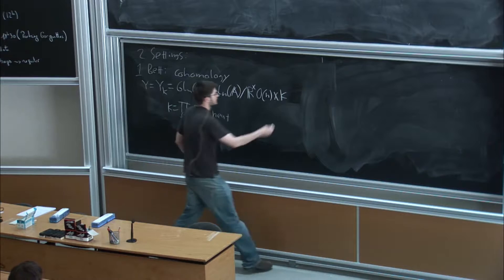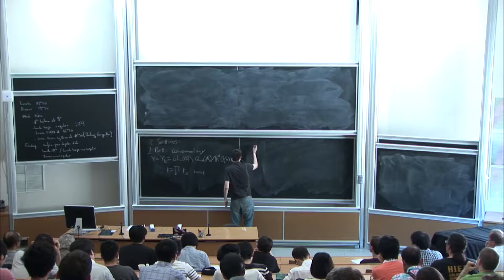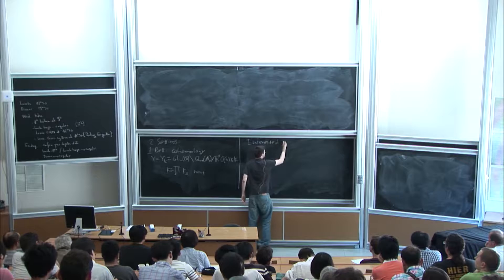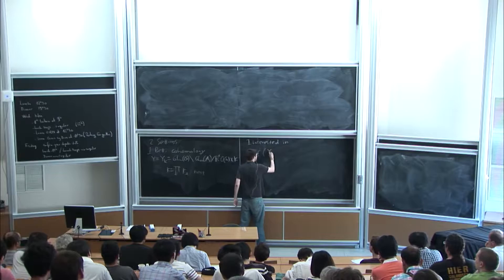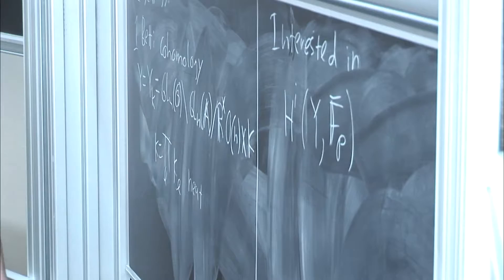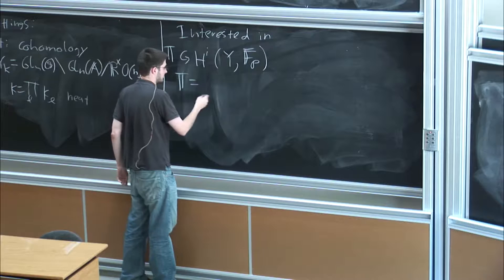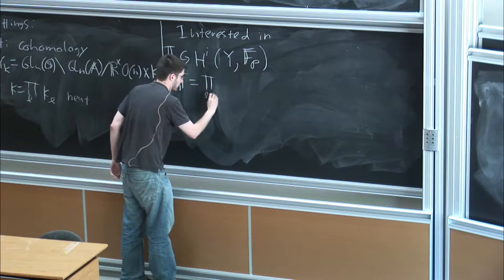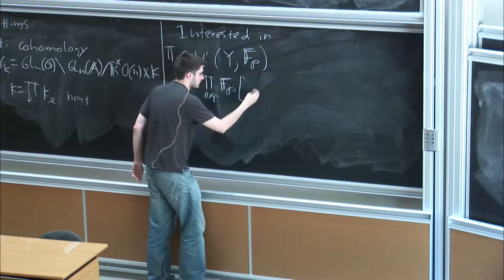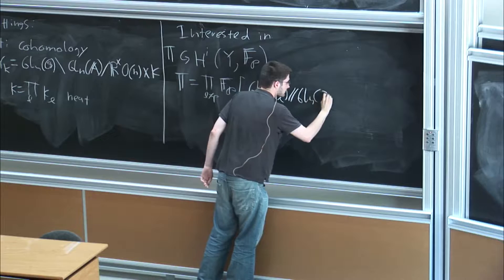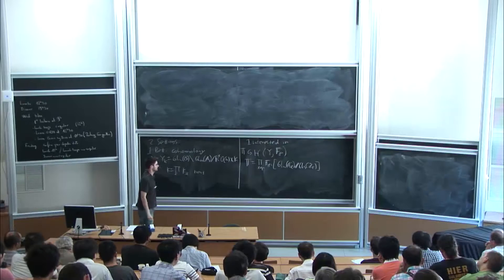What we're interested in here is the cohomology of Y with F_p-bar coefficients — P will be a fixed prime throughout the talk — and the action of the Hecke algebra on this, where this is the Hecke algebra associated to GL_N, maybe with F_p-bar coefficients, excluding the prime P. And of course there's the fantastic work of Peter Scholze in this setting, which I'll get to in a moment.